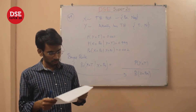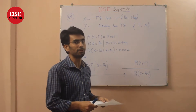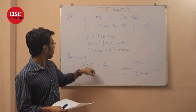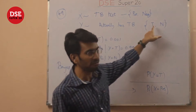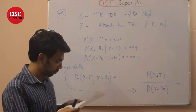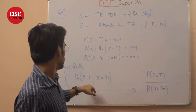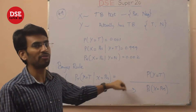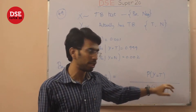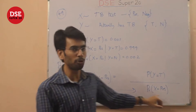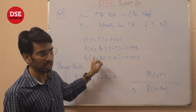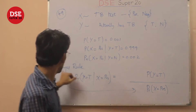The question asks: what is the probability that the person actually has TB given that the test is positive? That is, P(Y = TB | X = positive). From the property of conditional probability, this is given by the probability of Y = TB over the probability of X = positive. Since we know the conditional probabilities of X = positive, we use Bayes' rule.